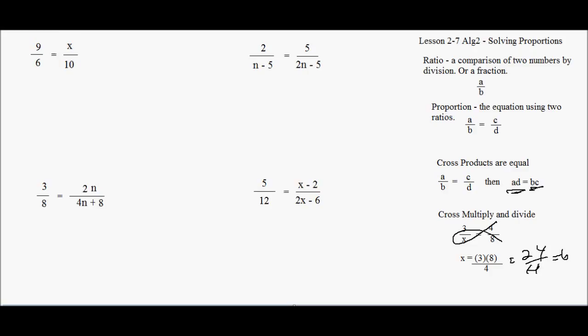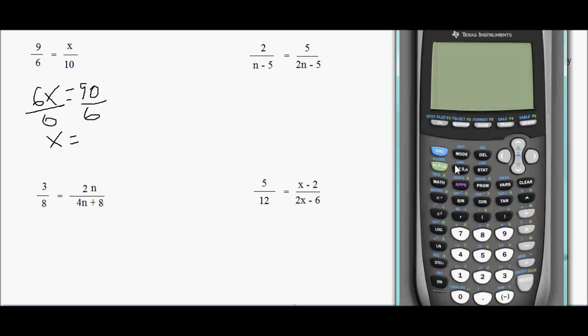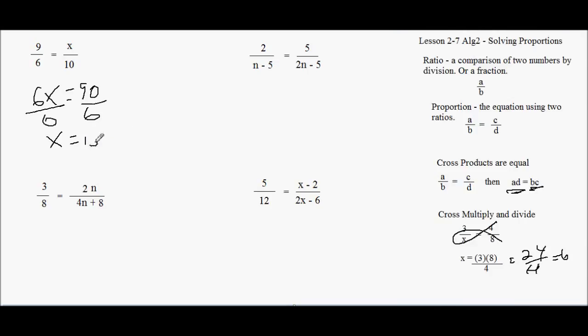Basically we're going to use cross-multiply. When you have two unknowns, we can't really use cross-multiply divide. We have to go ahead and just do cross-products. I'm going to cross-multiply this. I'm going to go six times X equals nine times ten, which is ninety. Divide both sides by six. Ninety divided by six is fifteen.